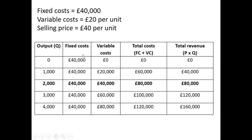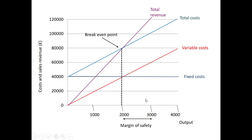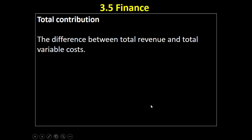That £20 is the contribution — it goes towards paying off the fixed costs, and once the fixed costs have been paid off, it goes towards making a profit. Contribution is the amount of money that each unit contributes towards fixed costs or profit.